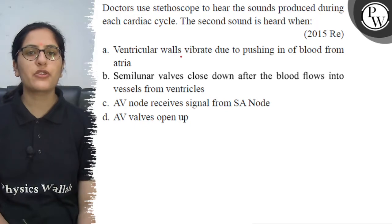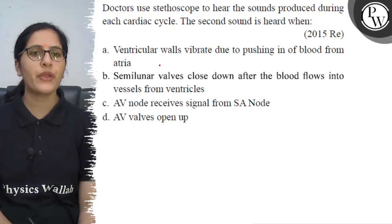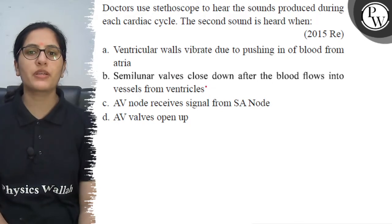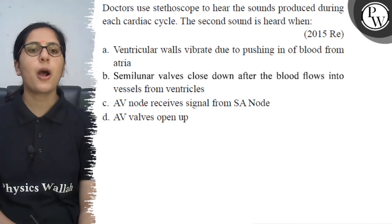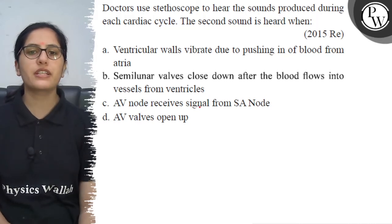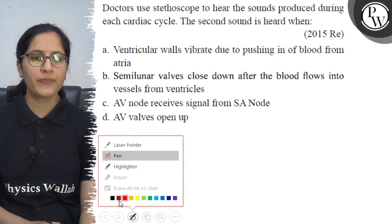Option A: ventricular walls vibrate due to pushing in of blood from arteries. Option B: semilunar valves close down after the blood flows into the vessel from ventricles. Option C: AV node receives signal from SA node. Option D: AV walls open up.